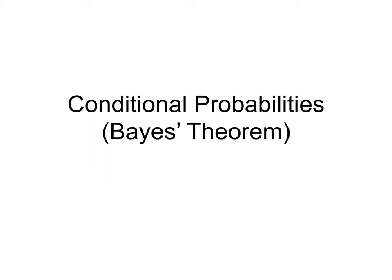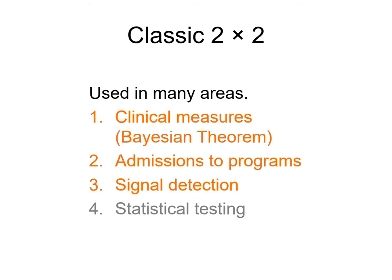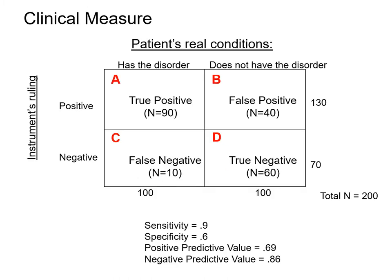In this lecture, let's talk about conditional probabilities. The classic two-by-two table is used in many areas: clinical measures, admissions to programs, physician hiring, signal detection theory, and statistical testing. We're not going to cover statistical testing since you already covered that in your statistics lectures in the previous semester.